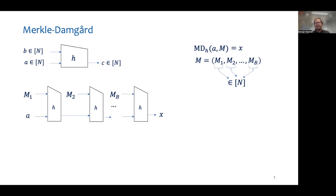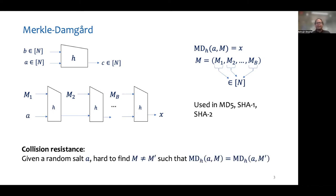This construction is used in MD5, SHA-1, and SHA-2. One very fundamental property that we want any hash function to satisfy is that of collision resistance. That is, given a random salt, it must be hard to find two distinct messages that hash to the same value.